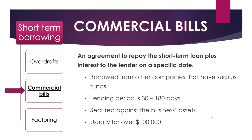The second form of short-term borrowing is called commercial bills. This is quite interesting because it's a source of finance not arranged with a bank — it actually occurs with businesses that have surplus funds and want to earn more interest than they would in a savings account. Commercial bills are an agreement to repay a short-term loan in the future plus interest to the lender. The lending period is usually 30 to 180 days, and the bill is secured against the business's assets — meaning if you cannot repay, you may need to sell assets to cover the debt.